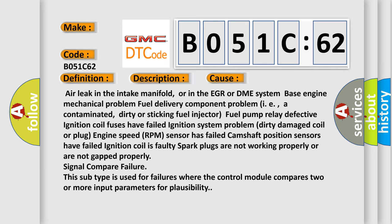Engine speed (RPM) sensor has failed. Camshaft position sensors have failed. Ignition coil is faulty. Spark plugs are not working properly or are not gapped properly. Signal Compare Failure: This subtype is used for failures where the control module compares two or more input parameters for plausibility.